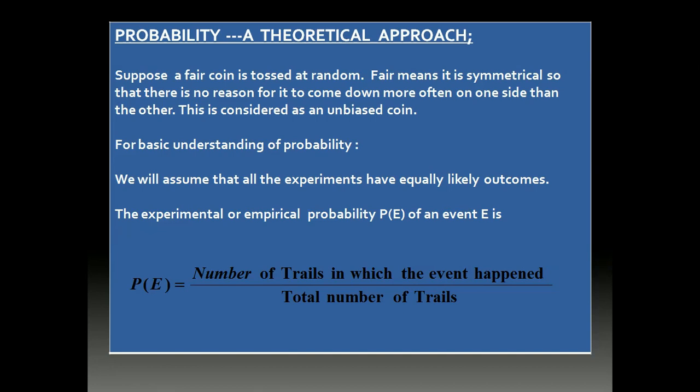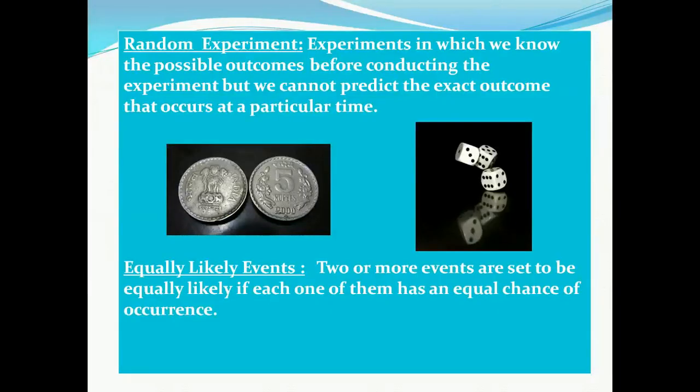The experimental or empirical probability P(E) of an event is denoted as: P(A) equals number of trials in which the event happened divided by the total number of trials. Let us understand a few terms, starting with random experiment.